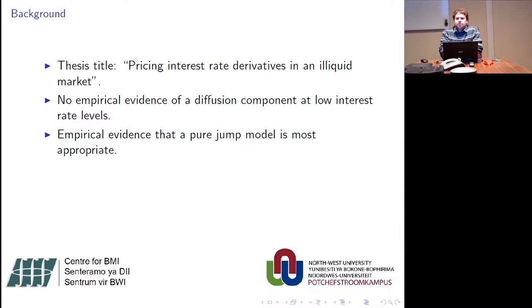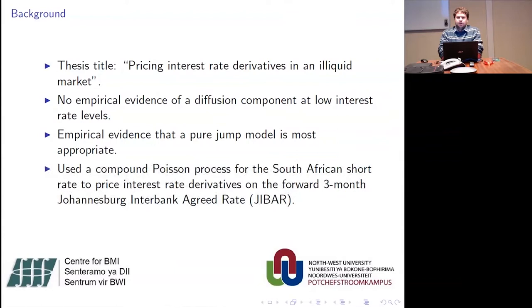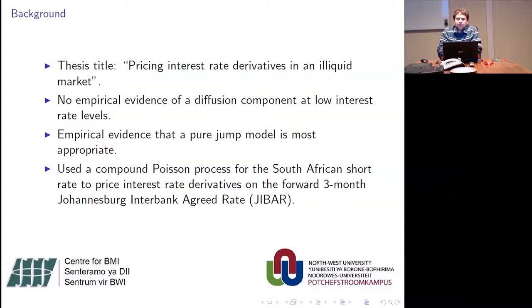We found empirical evidence that a pure jump model is most appropriate. We found no empirical evidence of a diffusion component at low interest rate levels — that is, an interest rate level state that remains constant for long times. We applied statistical tests for jumps on our data and came to our conclusions. What we used to price interest rate derivatives is a compound Poisson process with non-stationary increments, and we used that to price several interest rate derivatives on the forward three-month JIBAR rate.